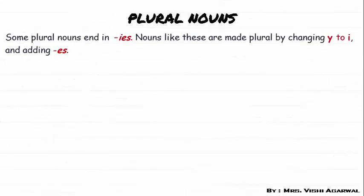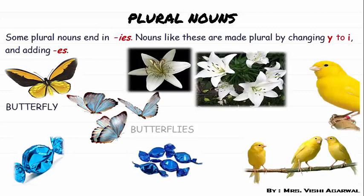Now some plural nouns end in IES. When a singular noun ends with Y, we change Y to I and add ES at the end of the word. For example, butterfly — the plural is butterflies. You can see that in butterfly the last letter is Y, so we change Y into I and then add ES, giving us butterflies.